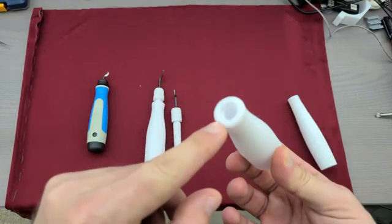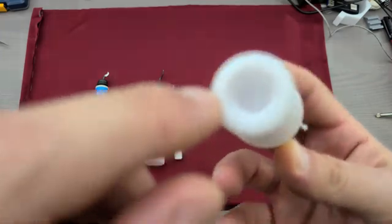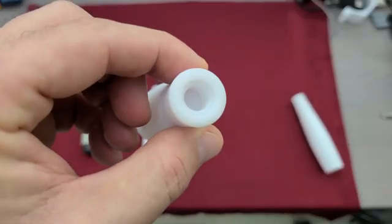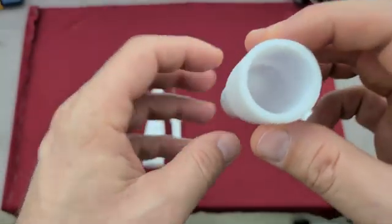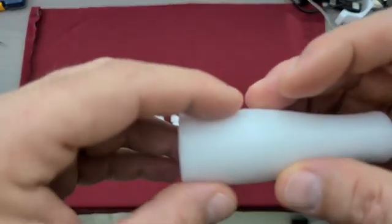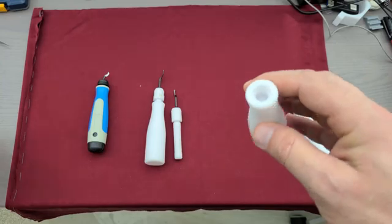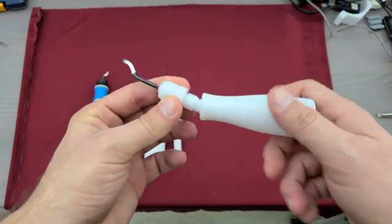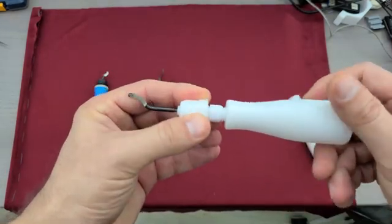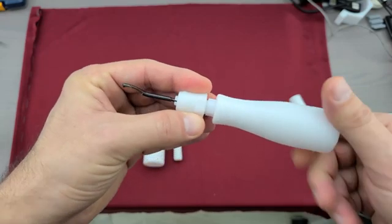We're going to put this one together. This is a modularized version so basically the collet threads in here, and you can have a storage compartment here. If you break a fin, you just 3D print the collet and that's it.